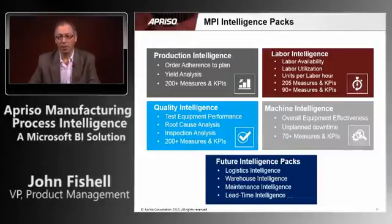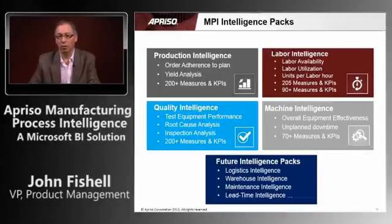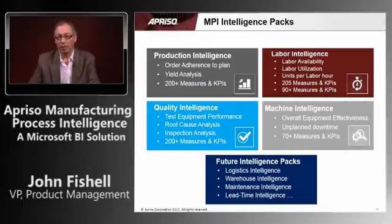Now let me talk about the intelligence packs that come with MPI. One of the key differentiators is that we packed up our expertise and knowledge into predefined KPIs, measures, and dimensions, with a variety of dashboards, reports, and analytic cubes to offer out-of-the-box functionality. We've done this for production, labor, quality, and machine intelligence. In the future, we'll be doing it for logistics, warehouse, and maintenance as well. The goal is an 80-20 split: 80% of what you need is right out of the box, ready to go with a quick ROI. The remaining 20% is easily defined by you — without involving your IT department — to configure or modify KPIs and customize screens to the way you want them. This is really where we bring the value, because of our manufacturing background and expertise.